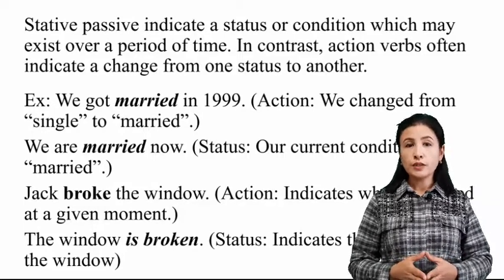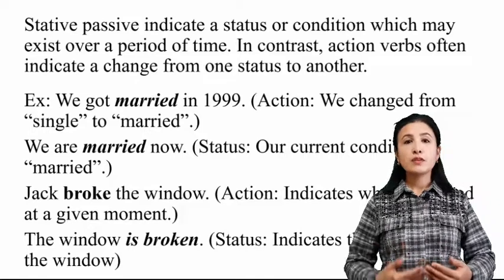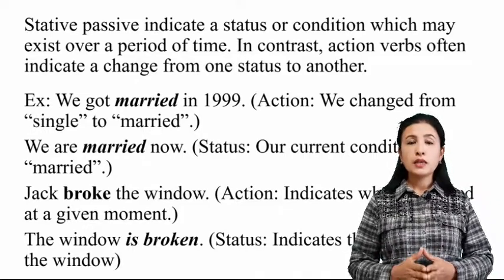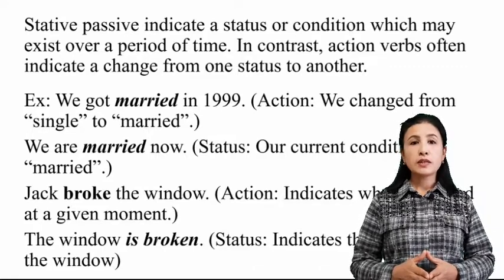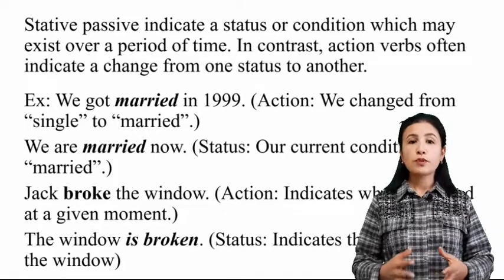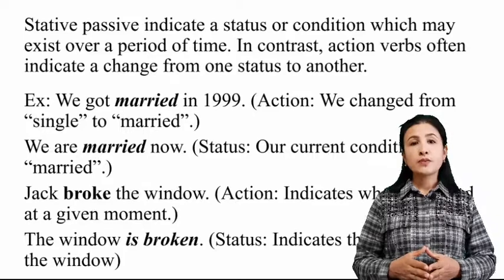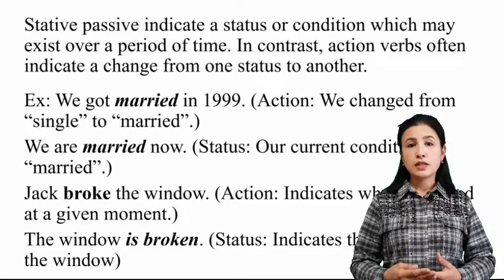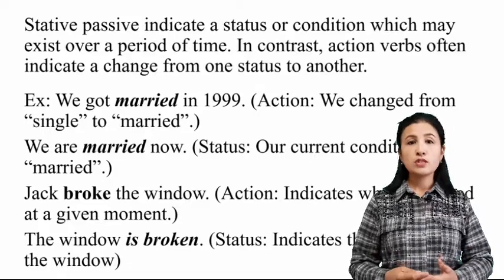In the following explanation, you can also get some detailed information. 'We got married in 1999.' In this sentence, 'got married' is a change — because we changed from single to married. And the next sentence: 'We are married now.' Here, 'married' is a status because our current condition is married.